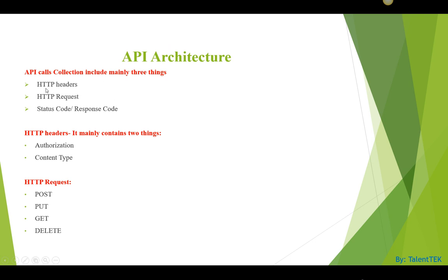The three main things you need to know about the API are HTTP headers, HTTP requests, and status or response codes. The headers contain two things: authorization and content type. Authorization pretty much means that in order to do a test, you might need to pass a user ID and password inside the header. You also need to tell the system the content type — whether you're returning a response or sending a request. Currently we use JSON or XML, and those are the two content types widely used today. You need to specify the content type in your headers while doing the testing.